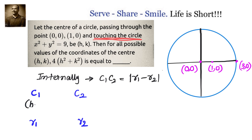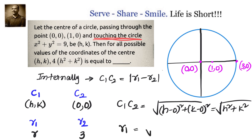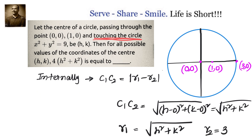For the first circle, the centre is (h, k) and the radius r1 equals √(h² + k²), because (0,0) is a point on the circle and (h, k) is the centre — the distance between the centre and a point on the circle is the radius. For the second circle, c2 is the origin (0,0) and its radius r2 = 3, since x² + y² = 3². The distance c1c2 = √(h² + k²) by the distance formula.